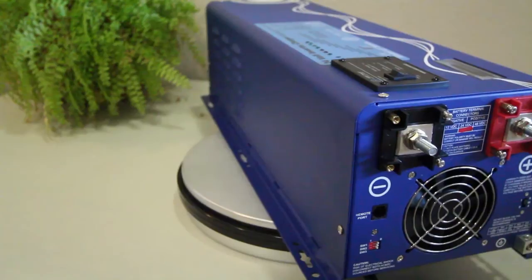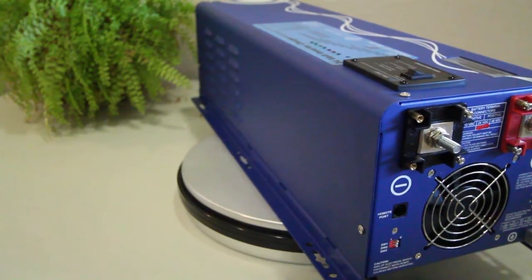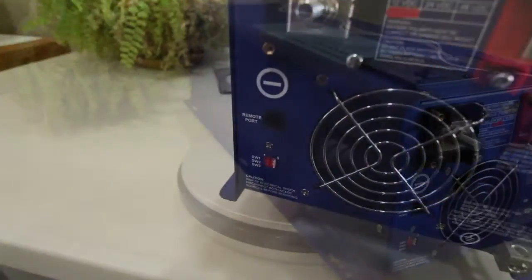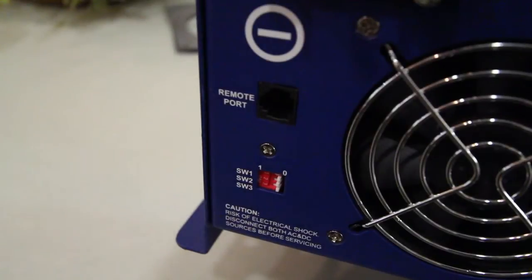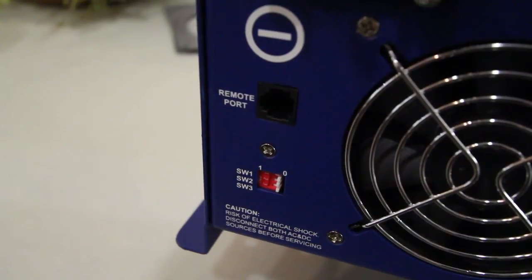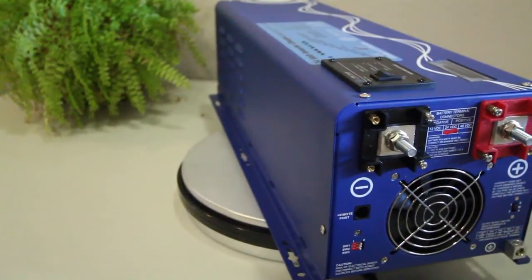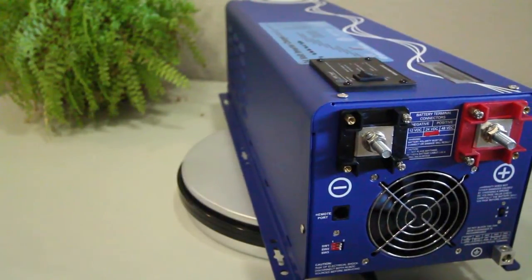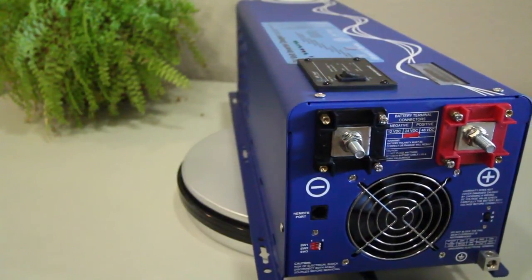As you can see on the bottom left hand corner of the DC side of this inverter, there are switches SW1, 2, and 3. SW1 changes the low battery voltage trip point, SW2 changes the AC input range, and SW3 changes the frequency at which a load is sensed in power save mode. We'll refer you to the user manual for more information on these features.